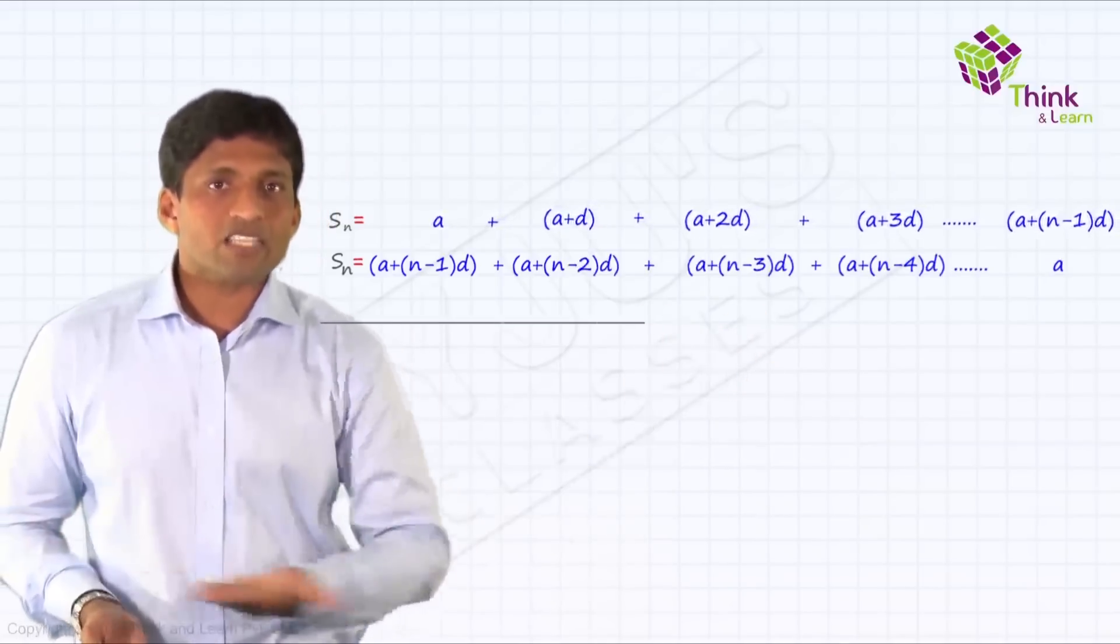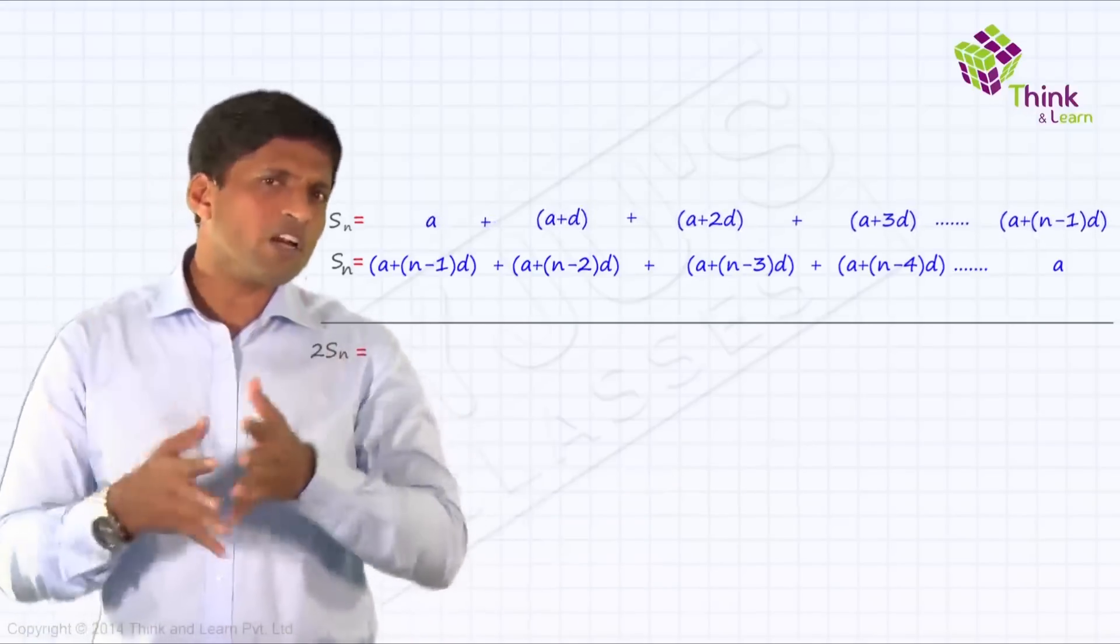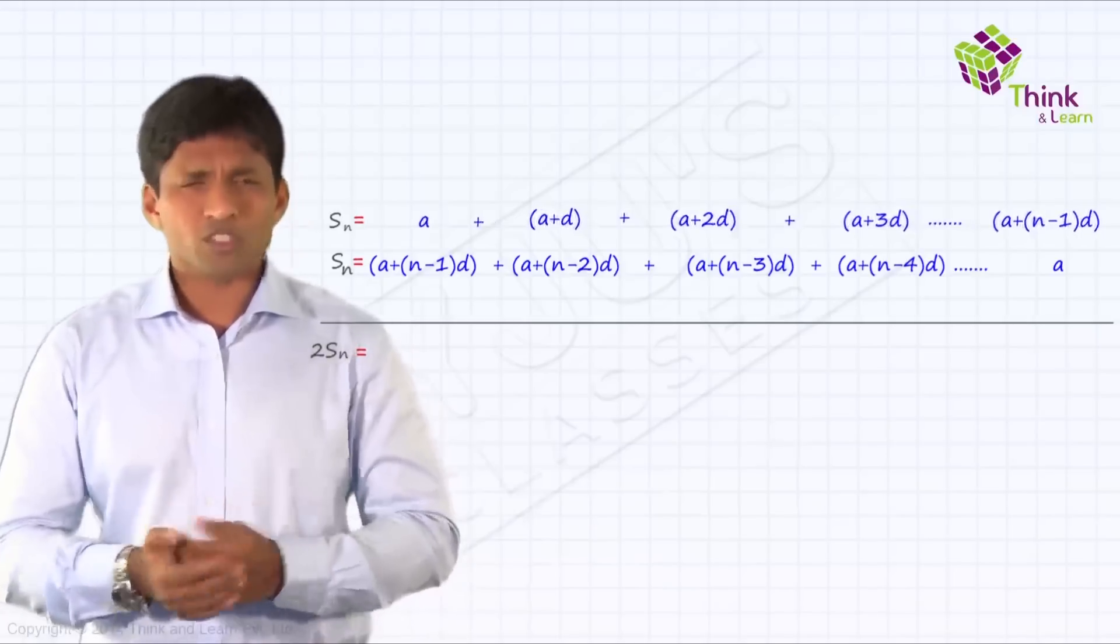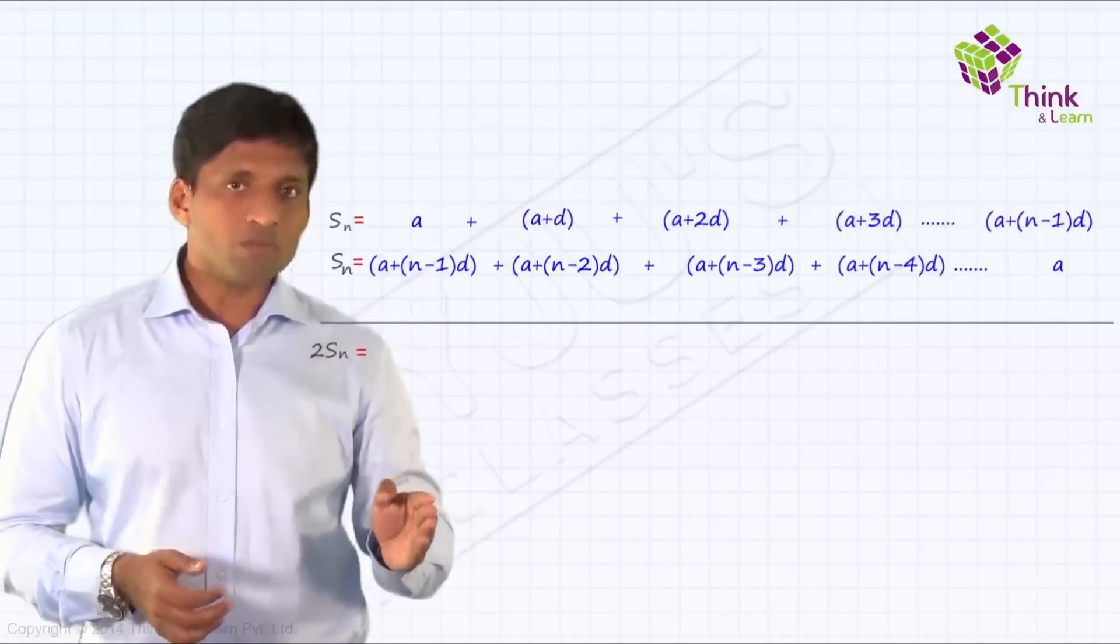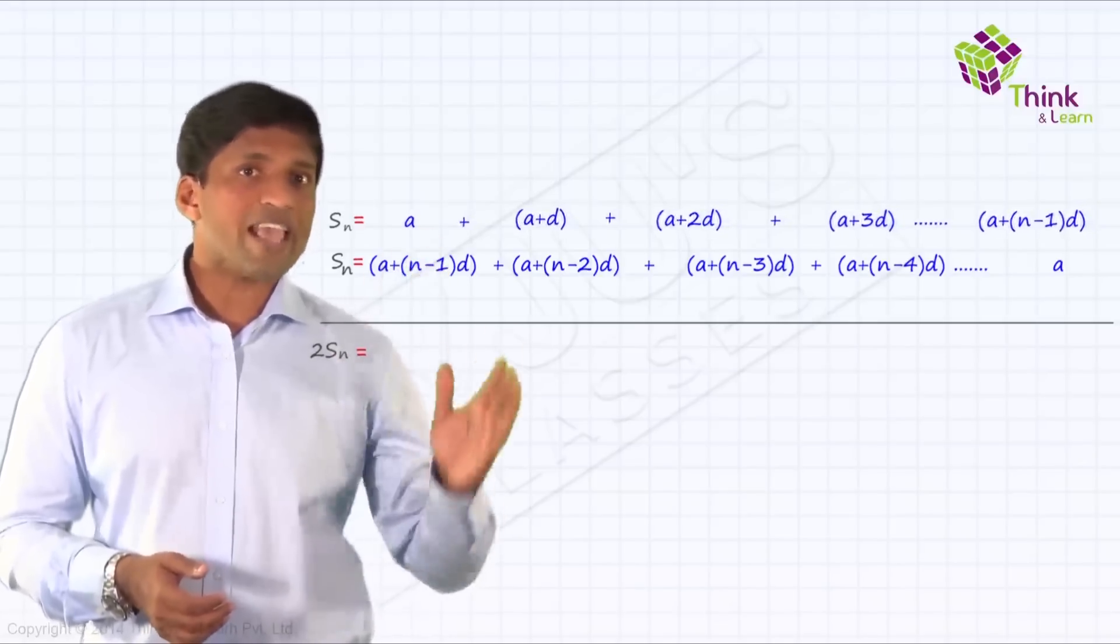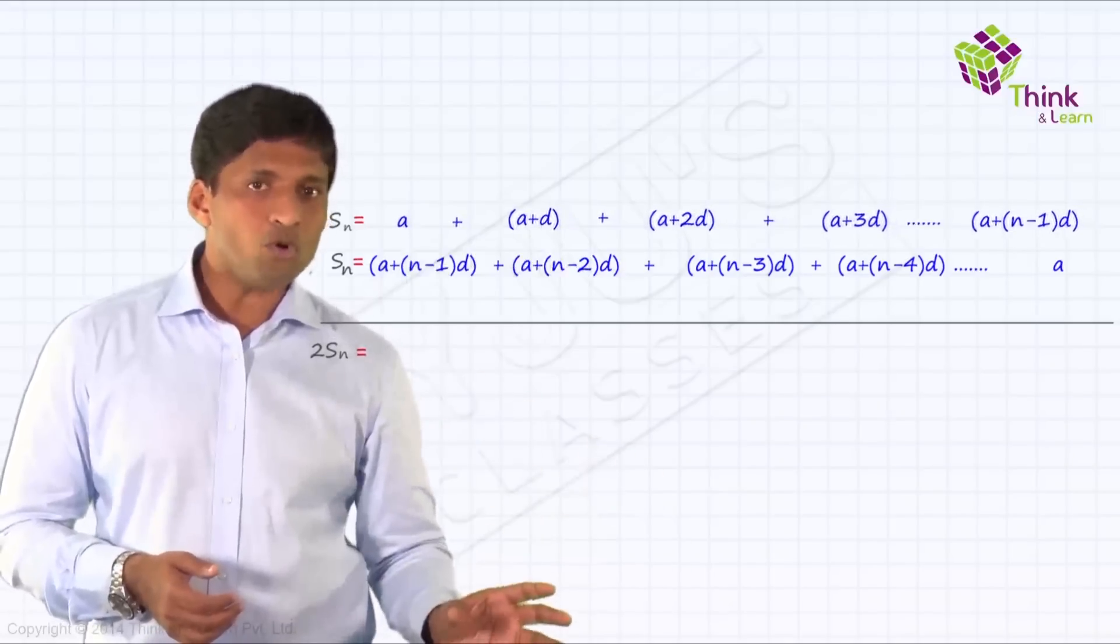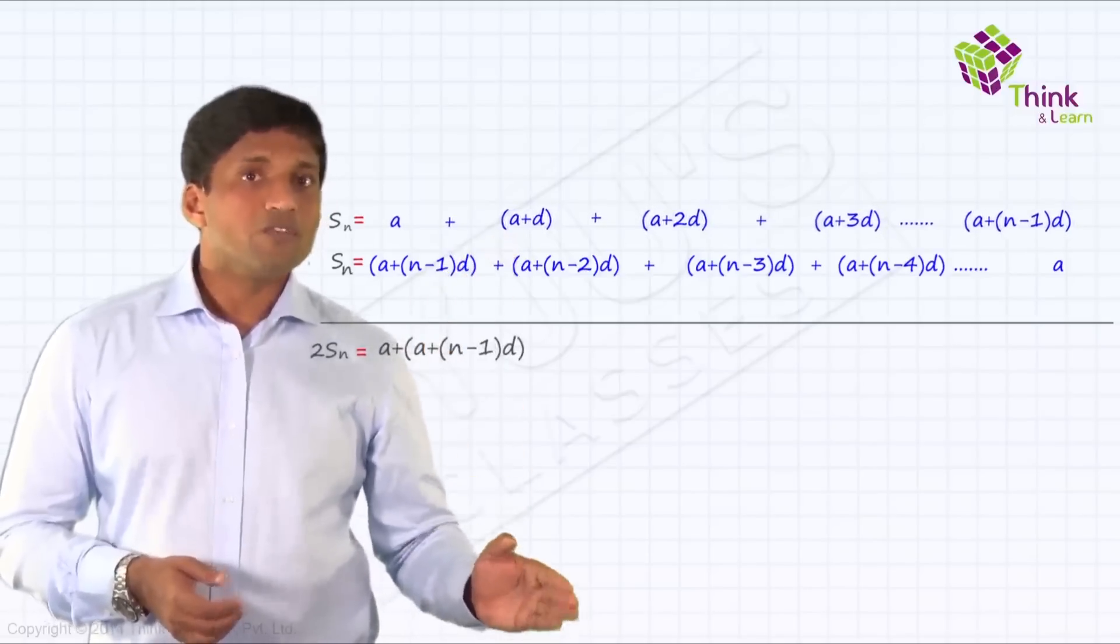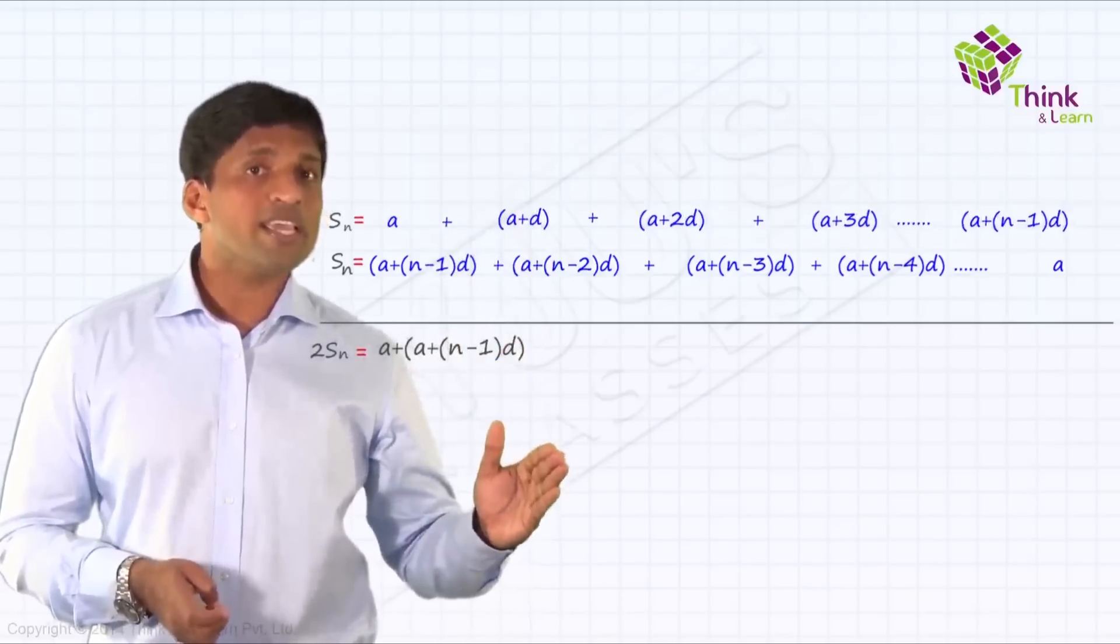Now, if I take the sum here, I will get 2 times Sn. This is very similar to what we did using those first four natural numbers. So I am sure you can understand. Sum of first and the last term, what we are getting, we know that first plus last is same as second plus second last. That is why all of them will add up to A plus A plus N minus 1 into D, which in this case is A is the first and A plus N minus 1 into D is the last.